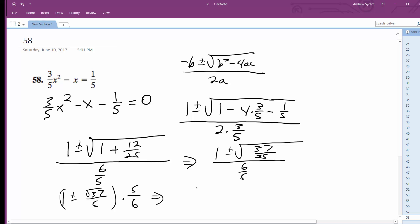Alright, so we get 5 plus or minus square root of 37, all over 6. That's what it simplifies down to.